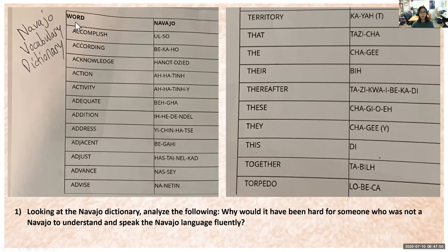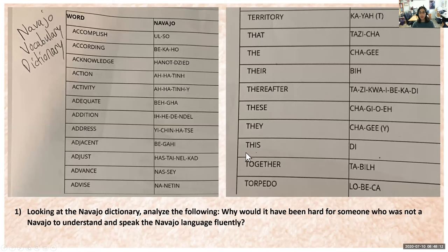Our next resource is the Navajo dictionary. Years and years later after the war, the Navajo dictionary was finally made accessible to everybody. We have English words on one side and their Navajo translations on the other. This is our Navajo vocabulary dictionary — take a few minutes to look it over. For example, the word 'accomplish' has a Navajo equivalent listed here.